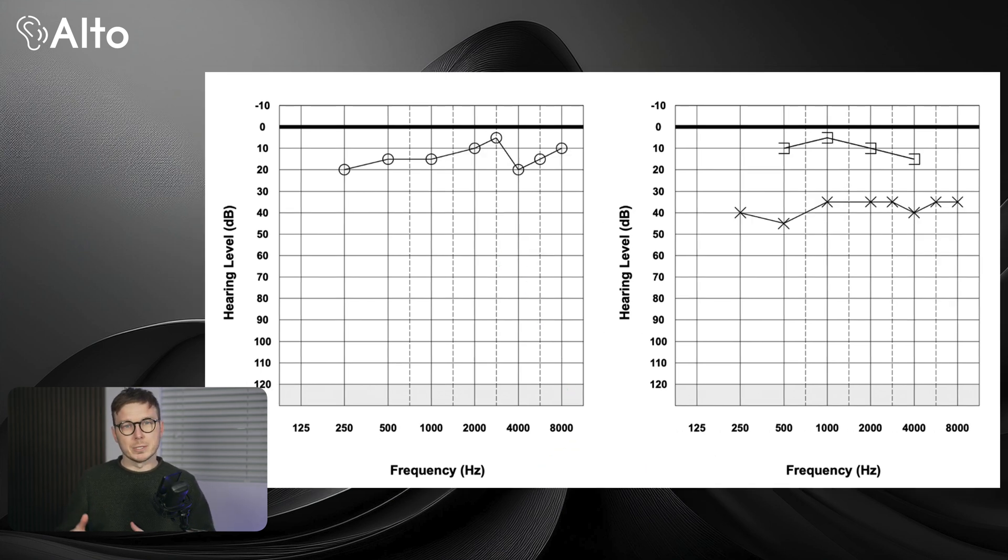But if your bone conduction is better than your air conduction, that suggests a conductive hearing loss where something is blocking or interfering with sound getting through, such as earwax, fluid, or issues with the middle ear bones. The difference between these two results helps us determine what kind of hearing problem you have and whether further investigation or treatment is needed.